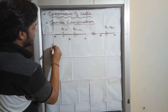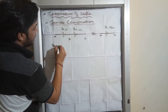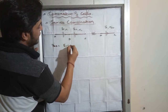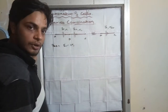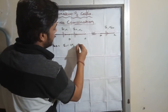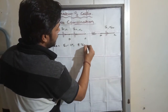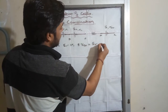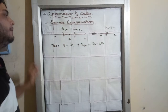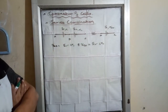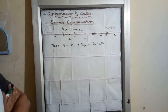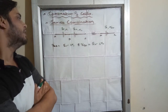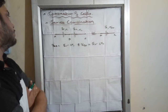Let's take VAB first. VAB is equal to E1 minus I R1. And VBC will be E2 minus I R2.